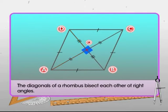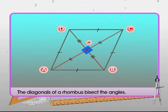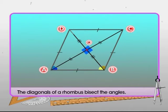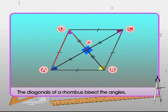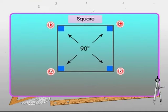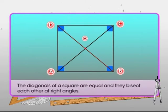The diagonals of a rhombus also bisect the angles. In the figure, angle DAO equals angle BAO, angle ABO equals angle CBO, angle BCO equals angle DCO, and angle ADO equals angle CDO. Now look closely — if all angles A, B, C, and D are equal to 90 degrees, the figure represents a square. A square is a rhombus with all its angles as right angles. The diagonals of a square are equal in length and bisect each other at right angles.